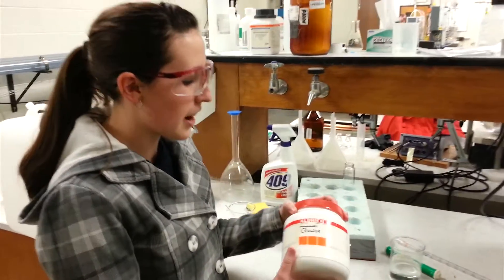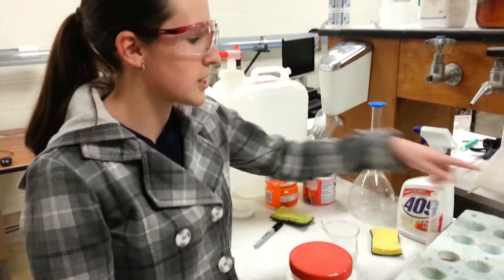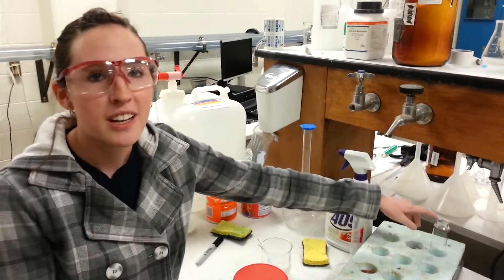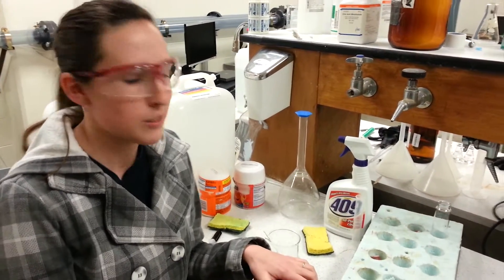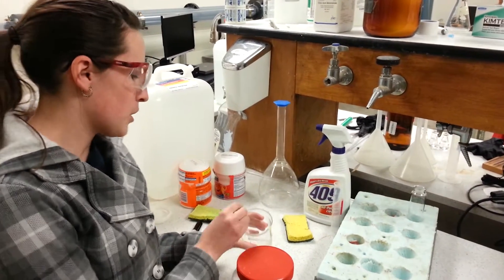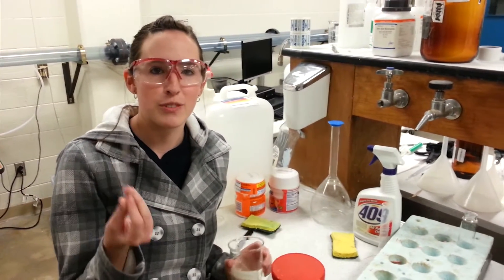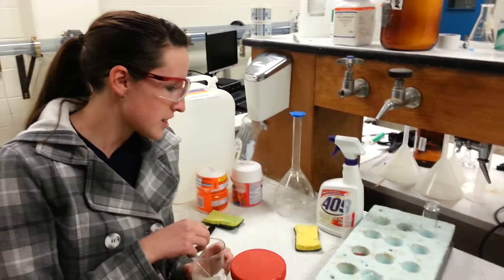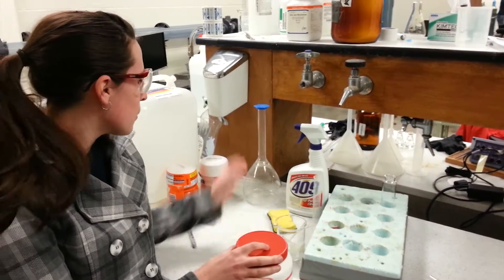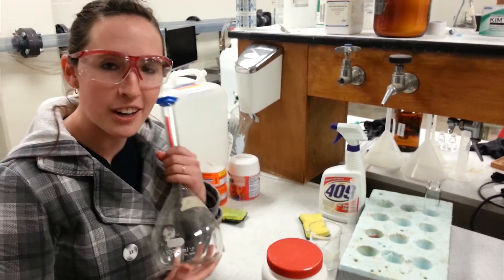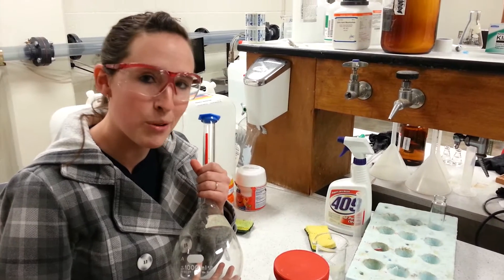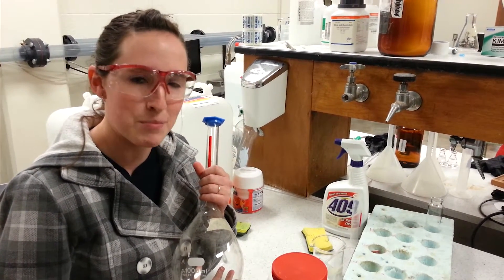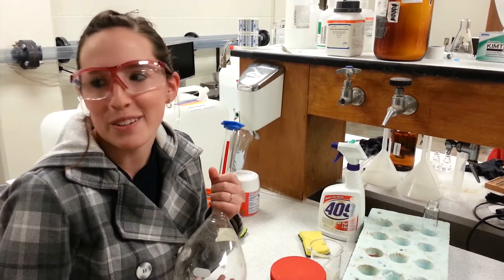One problem that we did have was we put glucose in each of our vials and then added water. But all the glucose is hardened so then we had to chip them out. It broke our stir bar, which was very sad for the day. So instead, next time, we will mix a solution in our volumetric glass and then pour it in so we don't have to chip again and break things. That was the main problem that we've had so far.